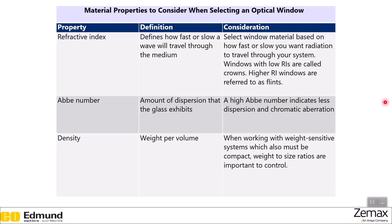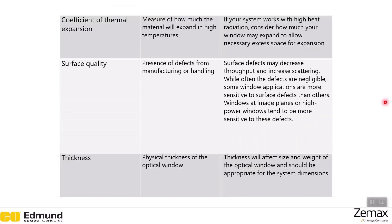Density of the material selected for your optical window is also very important, as this determines — particularly for weight-sensitive and space-sensitive systems — how much weight you will have in a certain volume. This is an important consideration for very large scale products where weight is a major concern, or very small scale products where fitting everything into a certain size is also a concern. The coefficient of thermal expansion measures how much the material will expand at high temperatures, so if your system works with high heat radiation, you need to allow necessary excess space for expansion in your design.